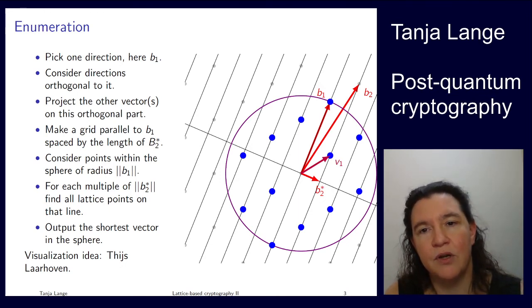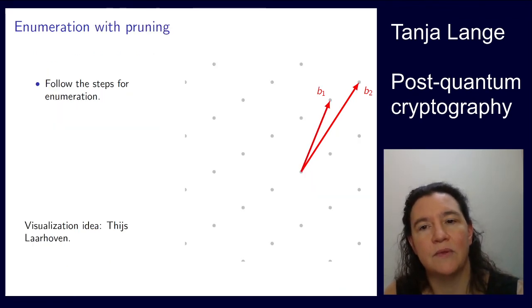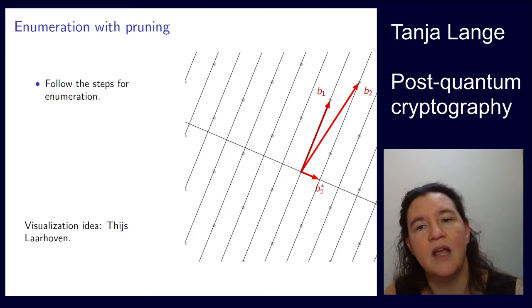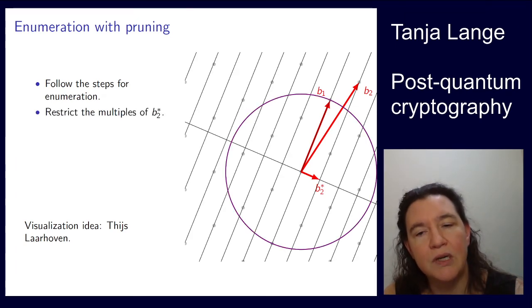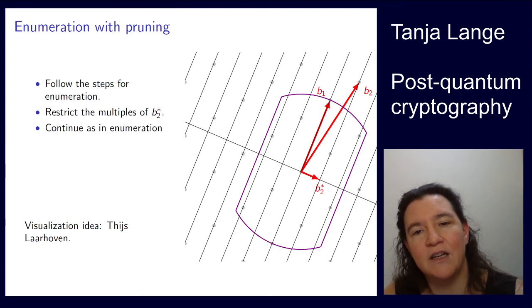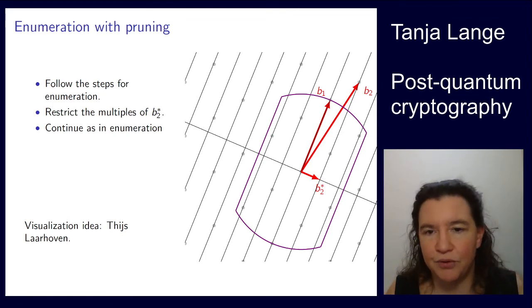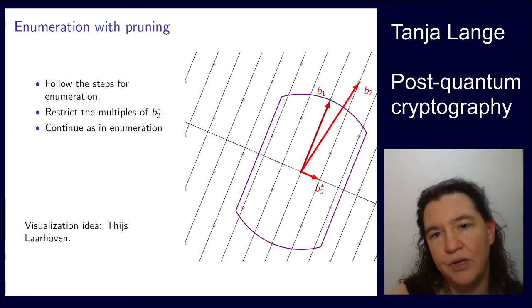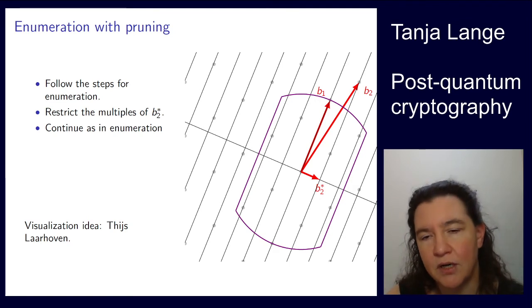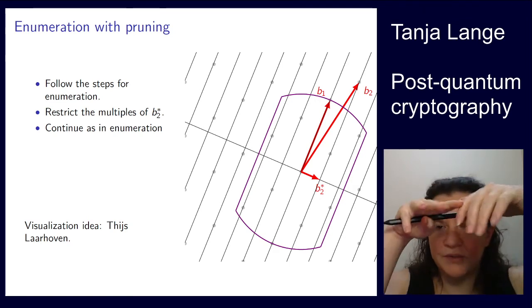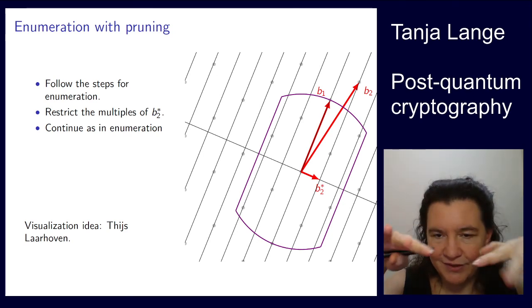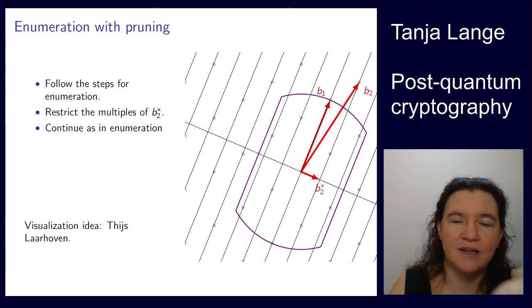That's the idea behind the pruning algorithms that say, well, since we are going for v1, it's the shortest of those which we found before, let's favor that direction over the other ones. Instead of considering a circle, we do the same as before, but instead of considering a circle, we are restricting the multiples of v2 by cutting off some part. That's where the pruning comes from. Like when you have a tree, you are cutting out the outer branches when you are pruning a tree. Similarly here, you are pruning the search tree by saying, okay, well, we don't want to have two large multiples of this v2 star.